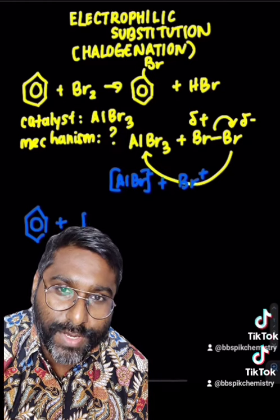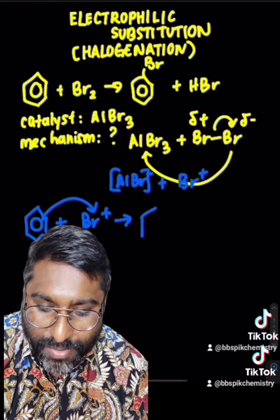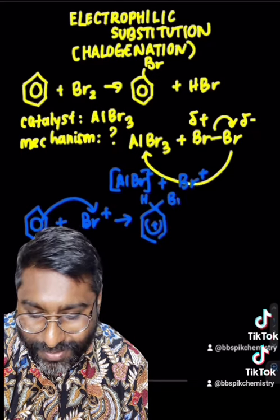you show the curly arrow diagram as the movement of electrons, so it will be moving from the benzene ring to the Br+, where they are going to form an intermediate with a partial positive charge.